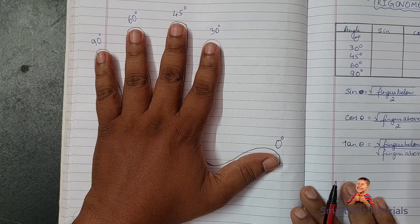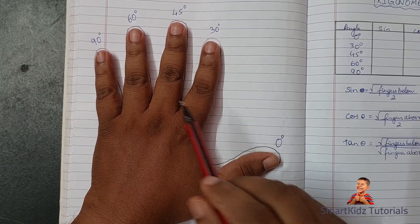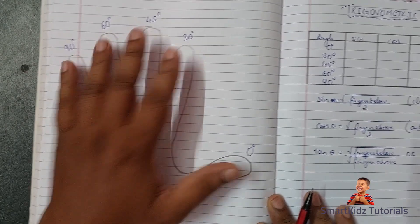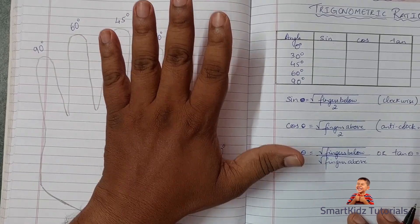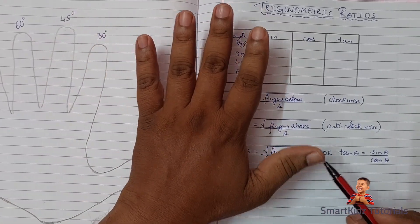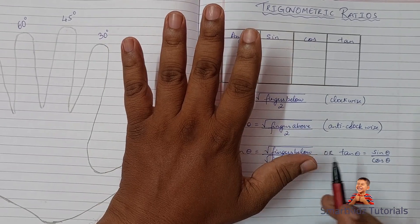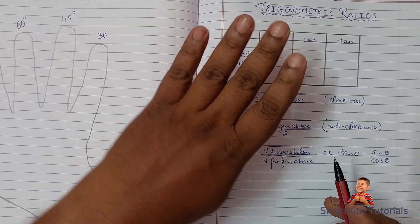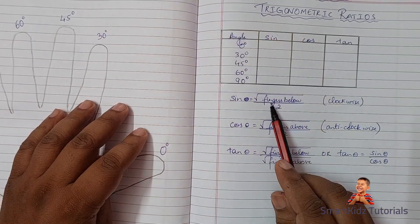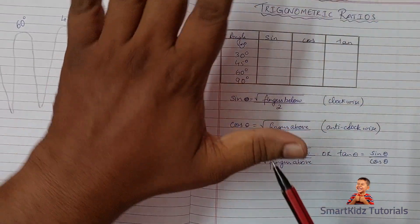Now for sine and cos, the fingers and the degrees assigned to them will not change. For sine we look at fingers below the closed finger. So for zero degrees, which is the thumb, we close this finger and we see only four fingers remaining, and we take the count of fingers below.